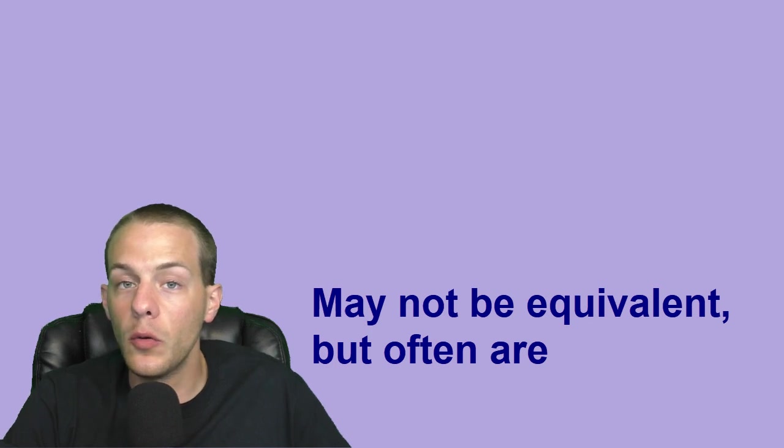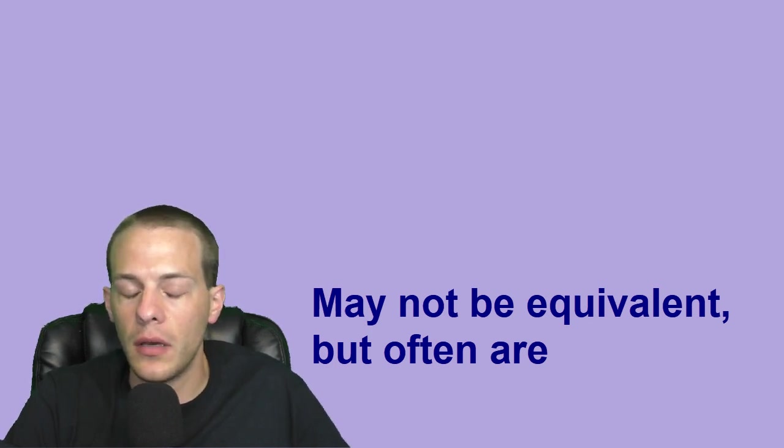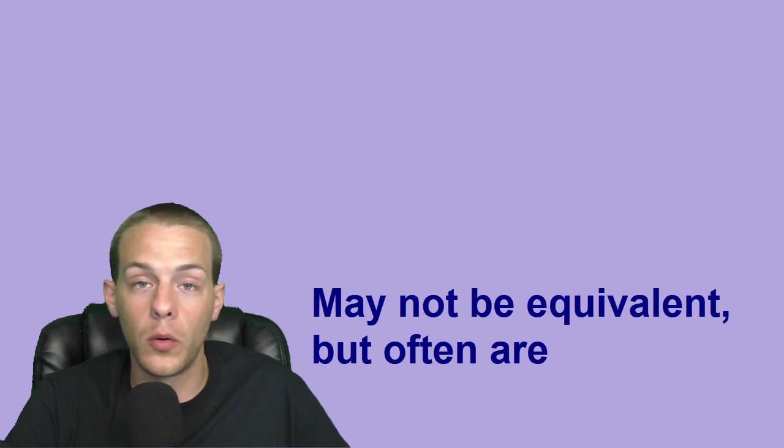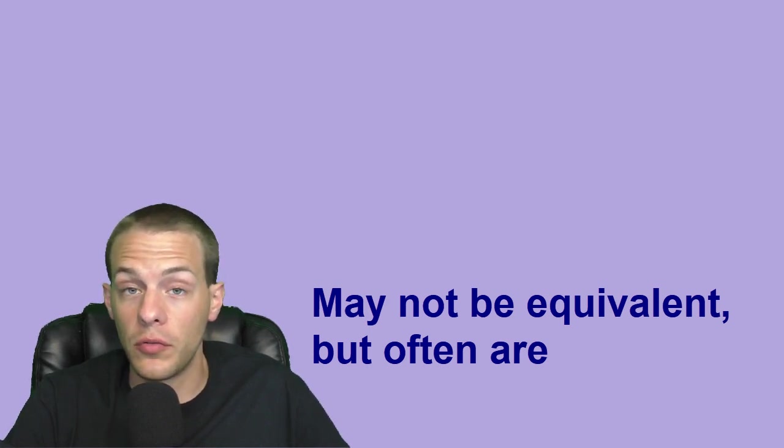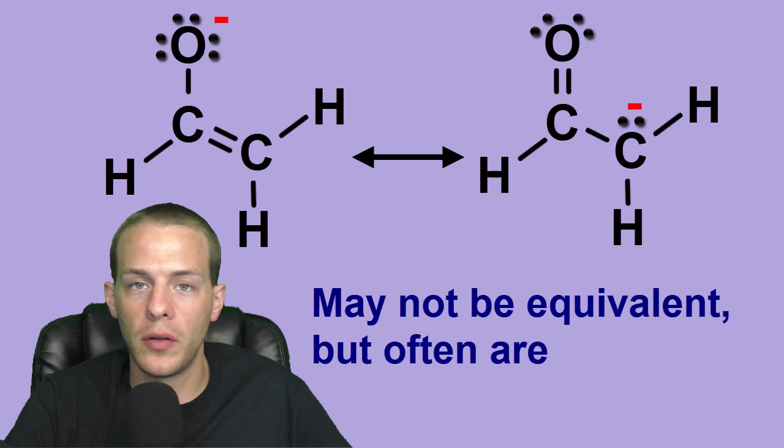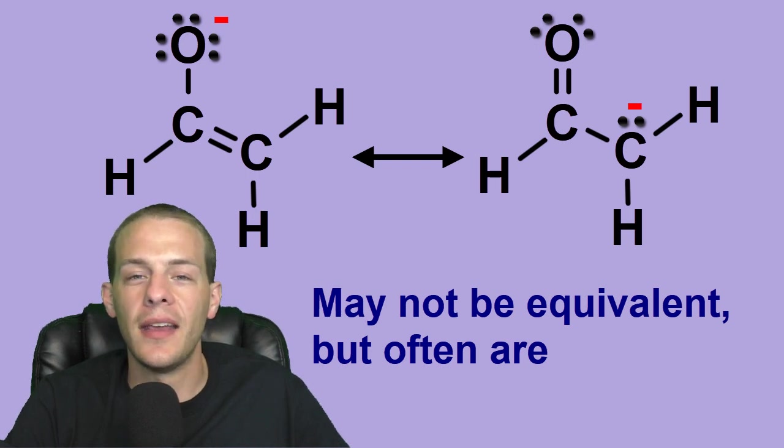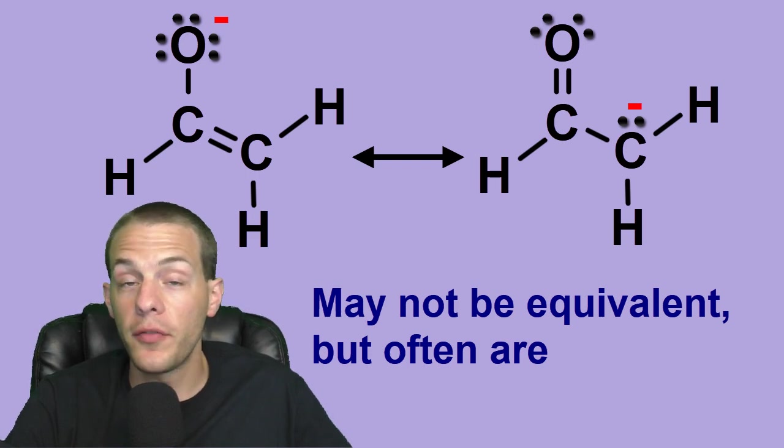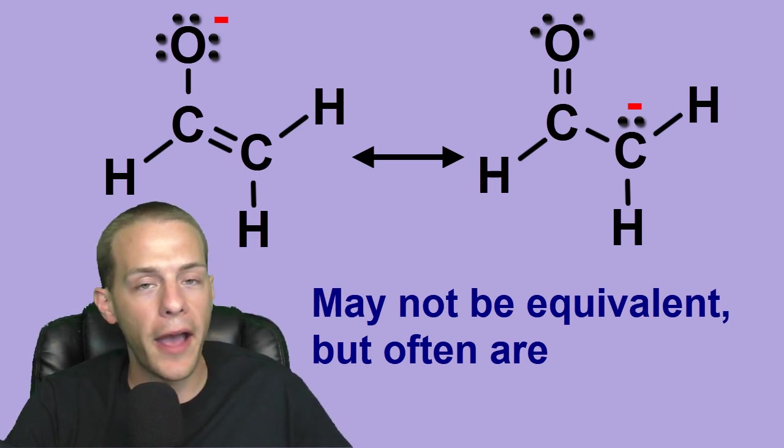The third rule of resonance forms is that resonance forms may not necessarily be equivalent to one another. In the acetate ion example, the resonance forms were equivalent. However, that's not necessarily the case all around. If you look at these two structures here, these are resonance forms. Again, they satisfy all those rules. They differ only in the position of pi and non-bonding electrons. And they're legitimate Lewis dot structures. There's not like a carbon with 10 bonds on it or anything like that. But they're not equivalent to one another. So oftentimes resonance forms are equivalent, but they don't have to be.